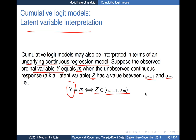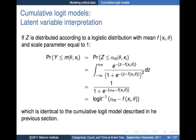We assign y the value of m when z falls in the interval between alpha m minus 1 and m. If z is distributed according to a logistic distribution with mean equal to f(x_i, theta) and scale parameter equal to 1, the probability that y is less than or equal to m is equivalent to the probability that z is less than or equal to alpha m. Integrating the logistic density from minus infinity to alpha m gives the inverse logit of alpha m minus f(x), which is exactly the same model we had.